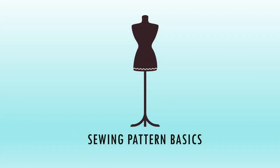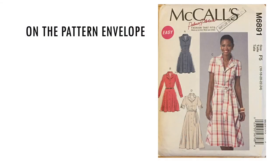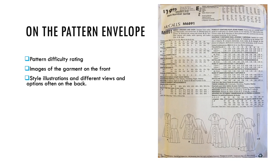Now let's talk about how to read and follow along with a commercial sewing pattern. On your pattern envelope there's a lot of information. First you'll see a pattern difficulty rating. There will be images of the garment on the front to give you an idea of what the finished piece will look like. On the back you'll usually see some style illustrations, different views and options. Technical illustrations help you understand the lines of the pattern more accurately. You'll see some charts related to your body size and usually the finished size of the garment. Look for fabric suggestions — these are guidelines for the kinds of fabric you can use and give you some direction when choosing fabric.